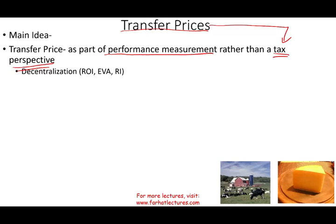The reason we're doing transfer prices is because in the prior session we looked at decentralization in a company, and when a company is decentralized, each division will be judged based on return on investments, economic value added, and residual income. Transfer prices is important because when one division sells to another division, the selling price of division A will be the cost of division B, so it affects performance measurement.